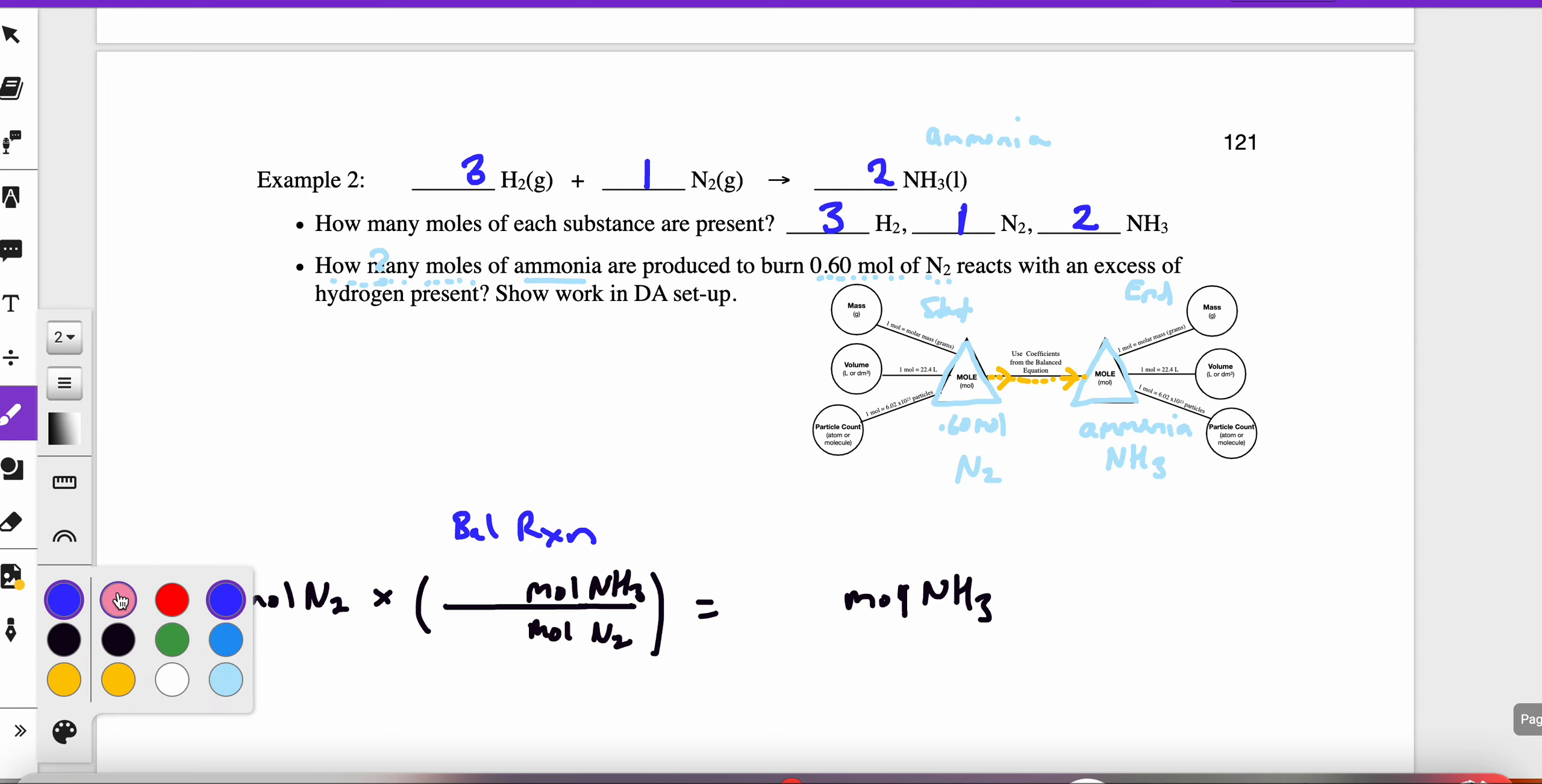Like I said before, so that I grab the right information, what I put down here is only the two substances I'm working the math with. So I need to know information about N2 and I need to know information about NH3 for the math problem. So the relationship is for every two moles of NH3, it requires one mole of N2. So when I put this into my calculator, 0.60 times two divided by one, I should produce 1.2 moles of NH3.